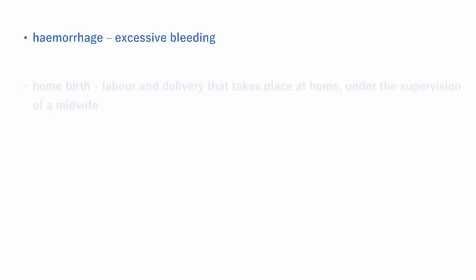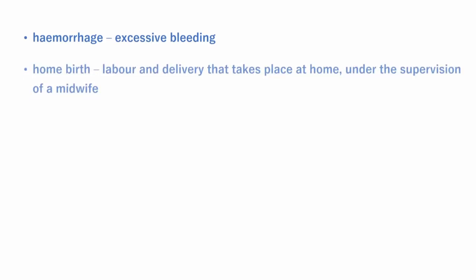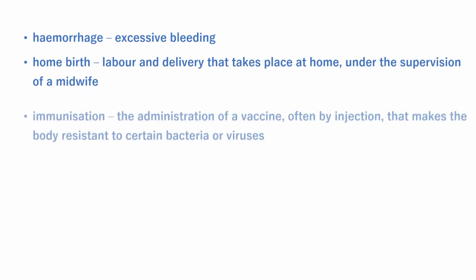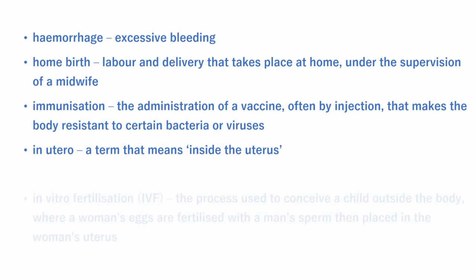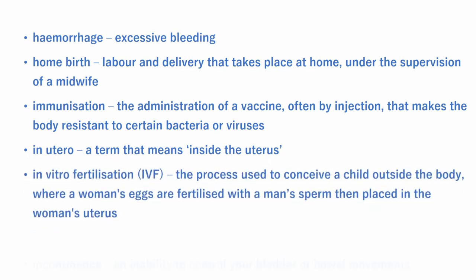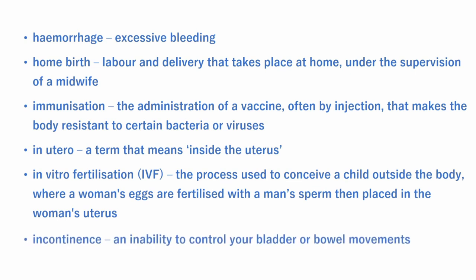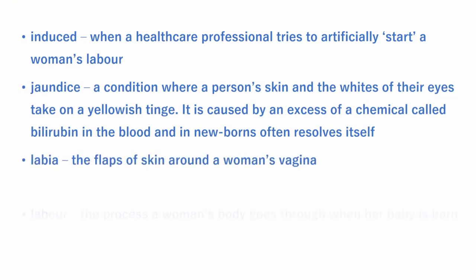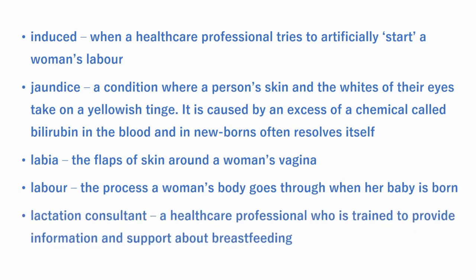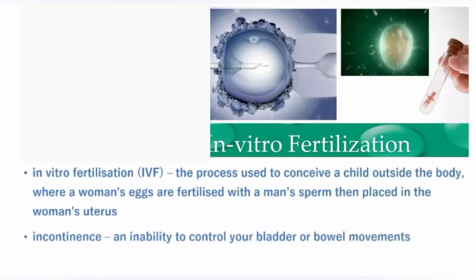Hemorrhoids is excessive bleeding. Home birth is when labor or delivery takes place at home under the supervision of a midwife. Immunization is the administration of a vaccine, often by injection, that makes the body resistant to certain bacteria or viruses. In utero means inside the uterus. Incontinence is an inability to control bladder or bowel movements. In vitro fertilization (IVF) is a process used to conceive a child outside the body, where a woman's egg is fertilized with a man's sperm and then placed into the uterus.